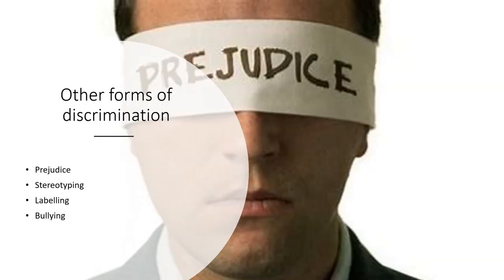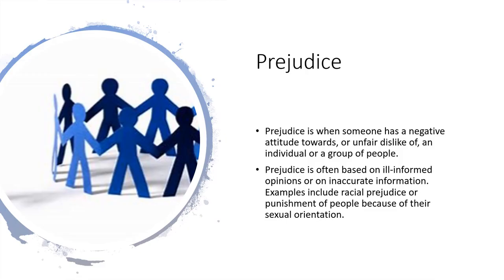We are now going to look at other forms of discrimination: prejudice, stereotyping, labelling and bullying. It's important you write these down. Prejudice is when someone has a negative attitude towards or an unfair dislike of an individual or group of people. It's often based on ill-informed opinions or inaccurate information. Examples include racial prejudice or punishment of people because of their sexual orientation.